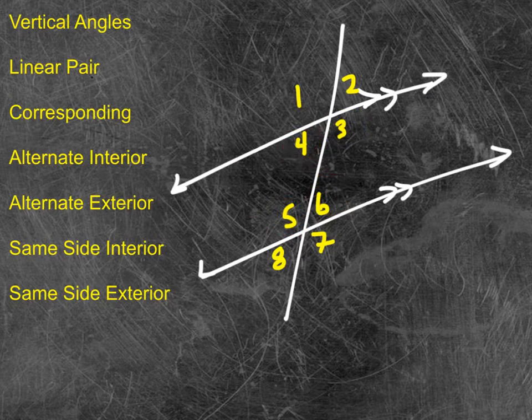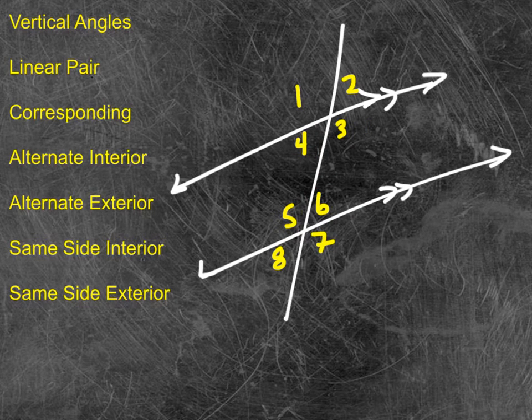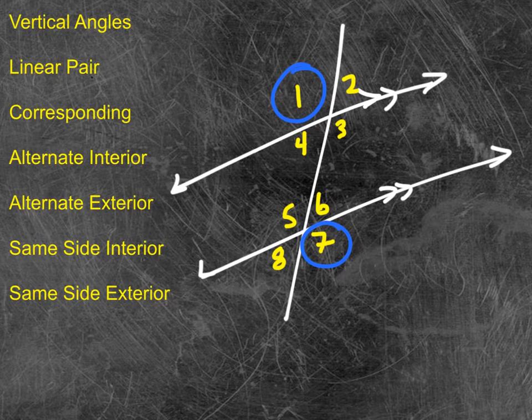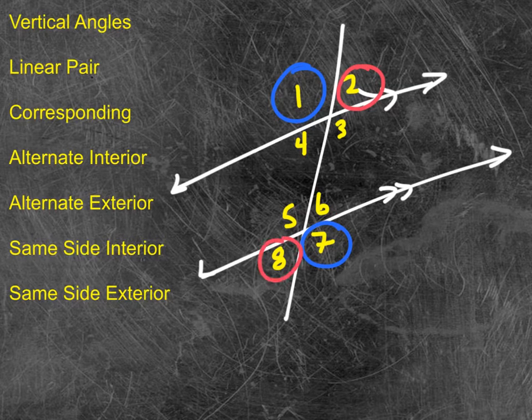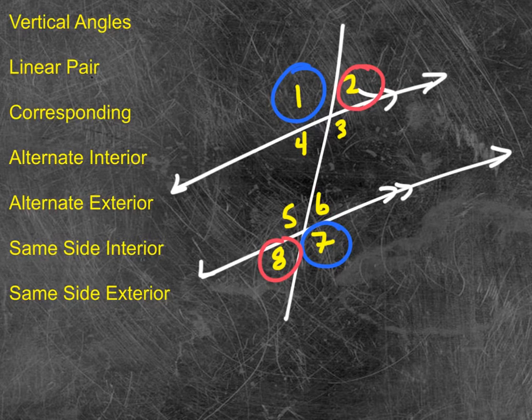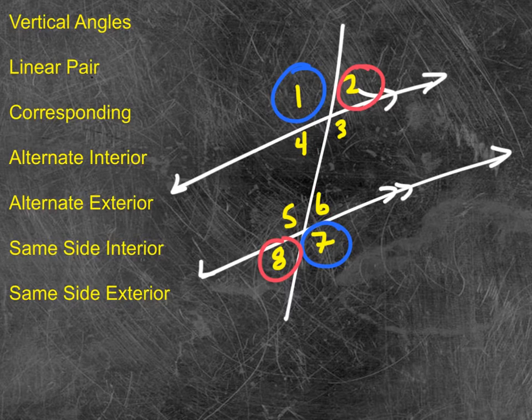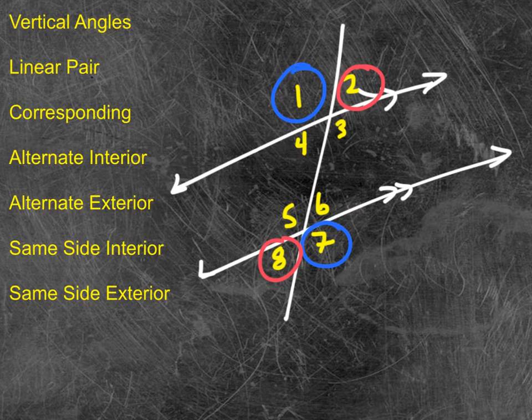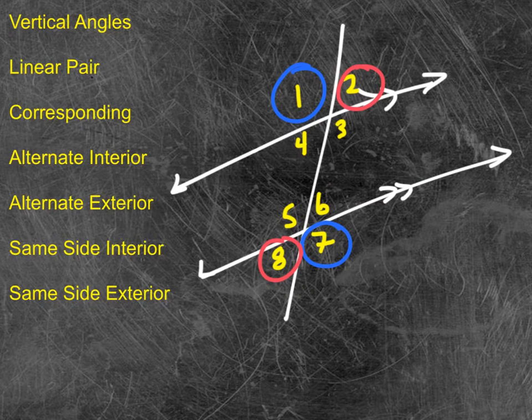And then we have what are called the alternate exterior. That would be like 1 and 7. It would be like 2 and 8. They are alternating the transversal, and they are in the exterior. So this is the exterior on the outside of those.